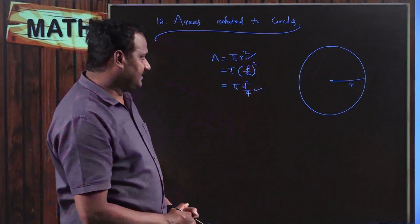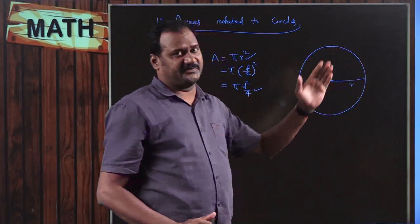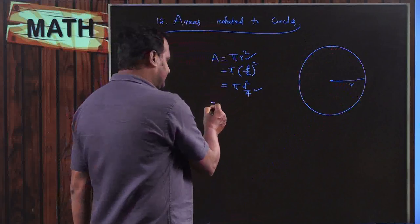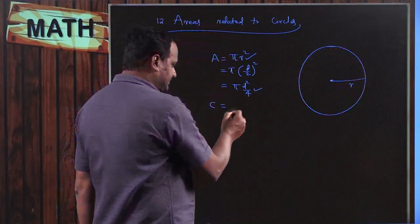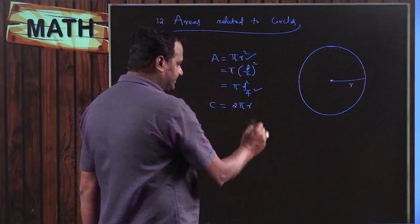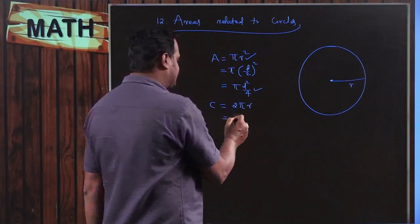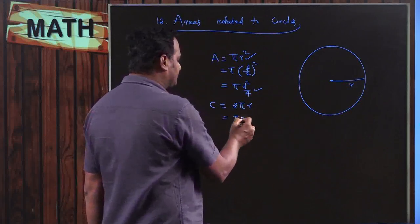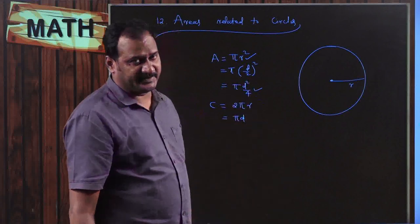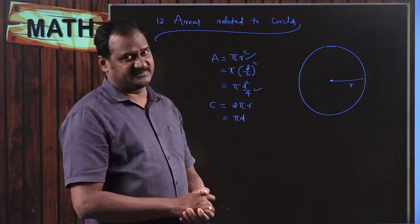The circumference of the circle is the length of the arc of the circle, which is 2πr. You can also write it as πd, since 2r equals the diameter. So πd or 2πr is the formula for the circumference of a circle.